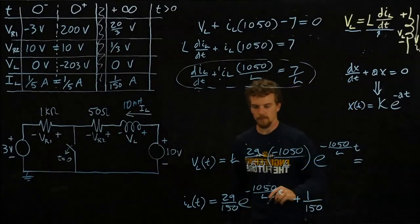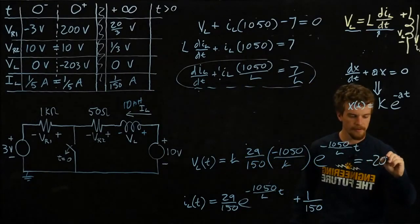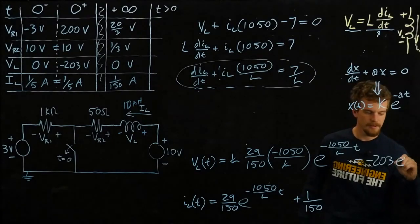Okay, so we get some cancellation here, and if we did this math, we would see that this was equal to negative 203, negative 203 times e to the negative 1050 over L times t.